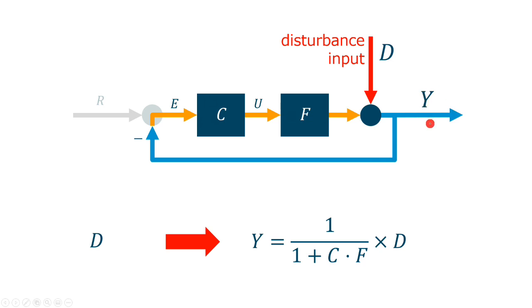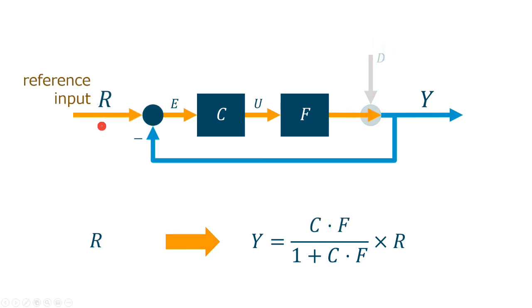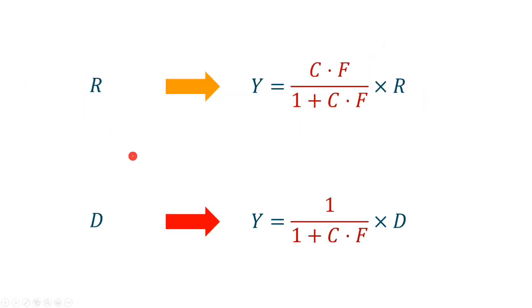So, the output Y is a superposition of the effect of the disturbance input and the reference input. Summarizing, the transfer function from R to Y is Cf divided by 1 plus Cf, and the transfer function from D to Y is 1 divided by 1 plus Cf.